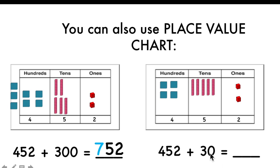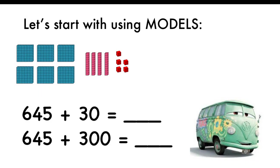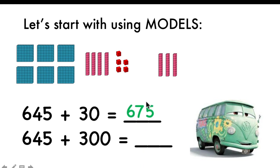Now, when I'm adding the tens, which digit stays the same? The hundreds digit and ones digit. Only the digit in the middle, which is the tens digit, will change. Five plus three tens equals eight. The number five will change into eight. Number four and two stay the same. You can also do it using the models. When you're adding thirty, you add three more tens. That means the digit in the tens place will change. Now we will not have four tens, but seven tens — it will become seven in the middle. Number six and five stay the same.